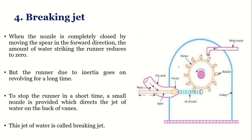The fourth component is the braking jet. After the turbine finishes its operation and we stop the water supply, due to inertia the runner keeps on rotating — similar to a fan that continues rotating for some time after being switched off before coming to rest. To immediately bring the runner to a rest position, we provide a small nozzle that allows water to flow on the back side of the vanes. This is called the braking jet, because that jet of water brakes the motion of the runner.